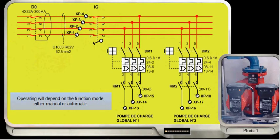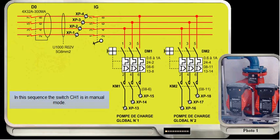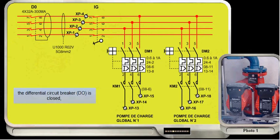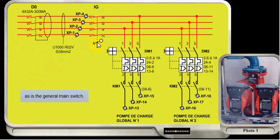Operating will depend on the function mode, either manual or automatic. In this sequence, the switch CH1 is in manual mode. The system is powered. The differential circuit breaker DO is closed, as is the general main switch.